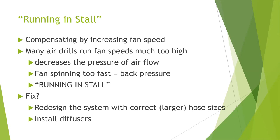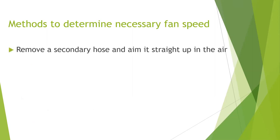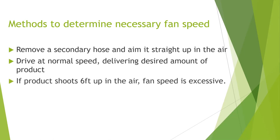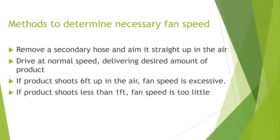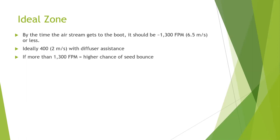One method to determine necessary fan speed: remove a secondary hose and aim it straight up in the air. Drive at normal speed delivering the desired amount of product. If the product is flowing six feet up in the air, fan speed is excessive. If the product is blowing less than 12 inches up into the air, then too little. About 18 to 24 inches is the ideal zone. By the time the airstream gets to the boot, it should be about 1,300 FPM or less, and ideally only about 400 FPM with the assistance of diffusers in the secondaries just above the boot. Any more than that and there's a higher chance of seed bounce, depending on seed tube and boot design and maintenance. This is where diffusers at the manifold — such as SeedViews — and in the secondaries are a considerable advantage.